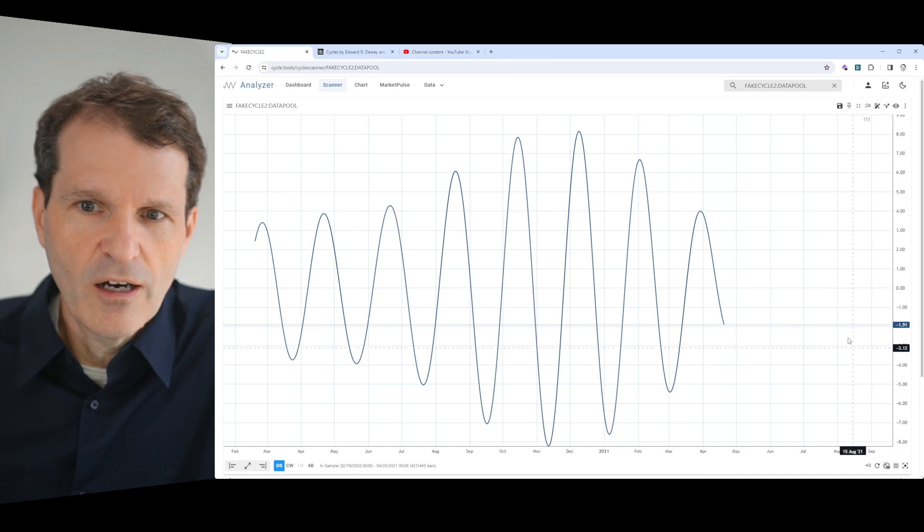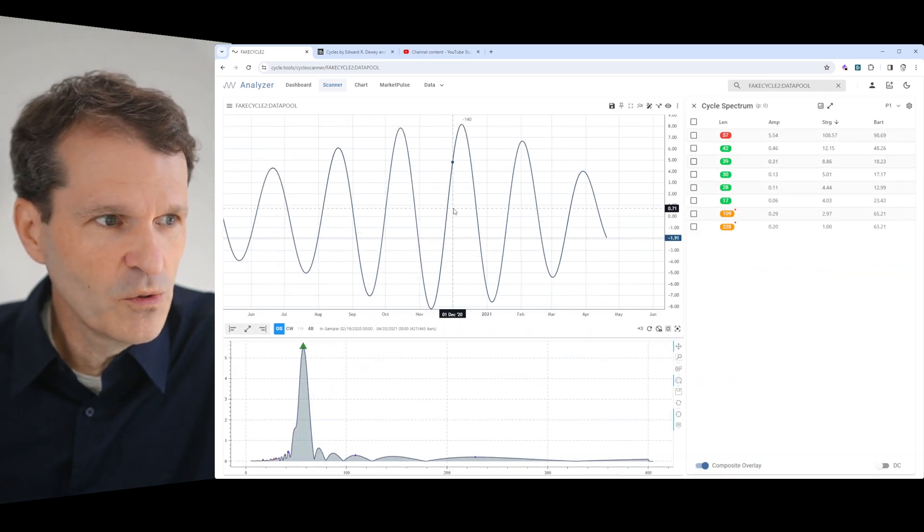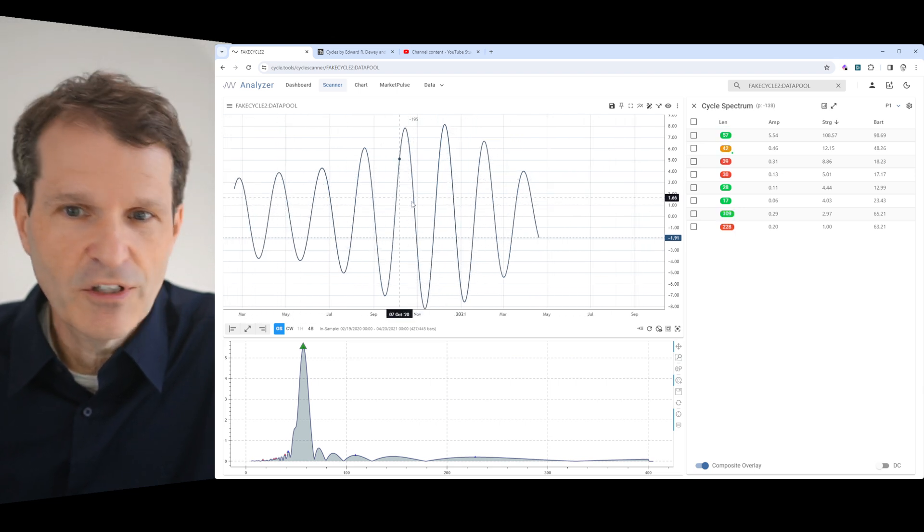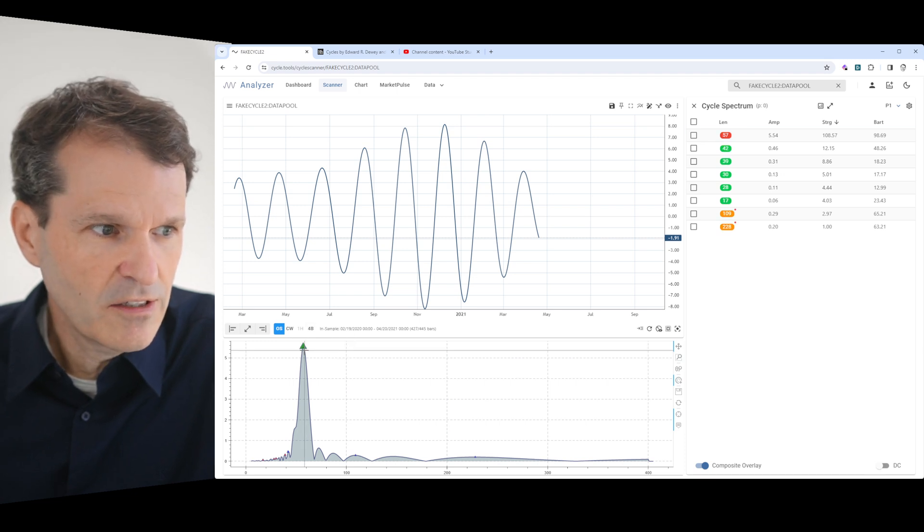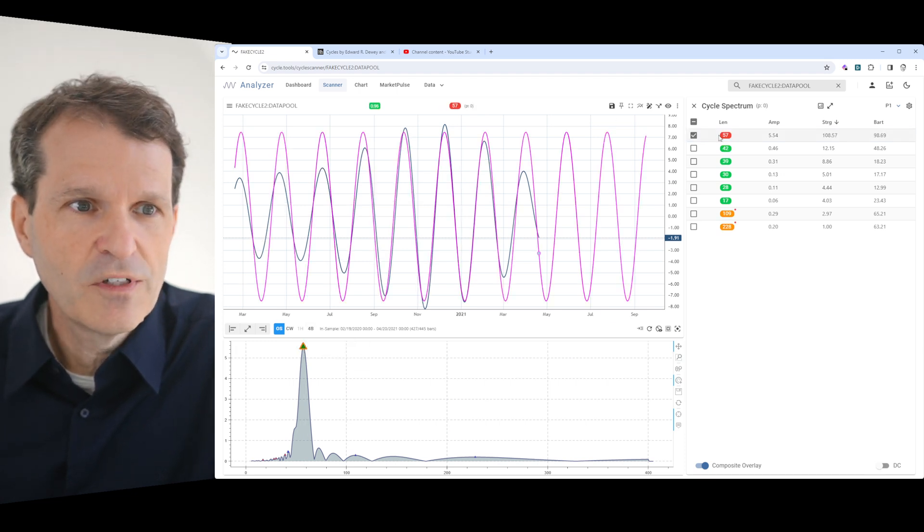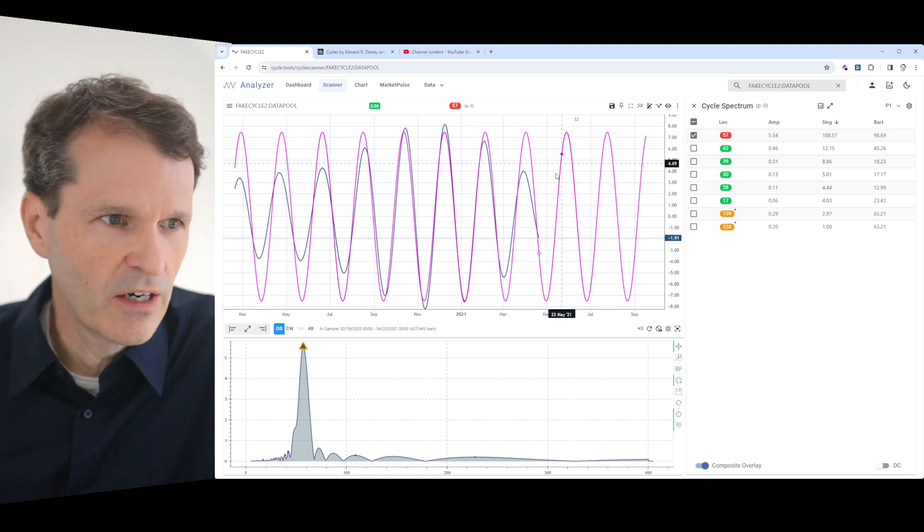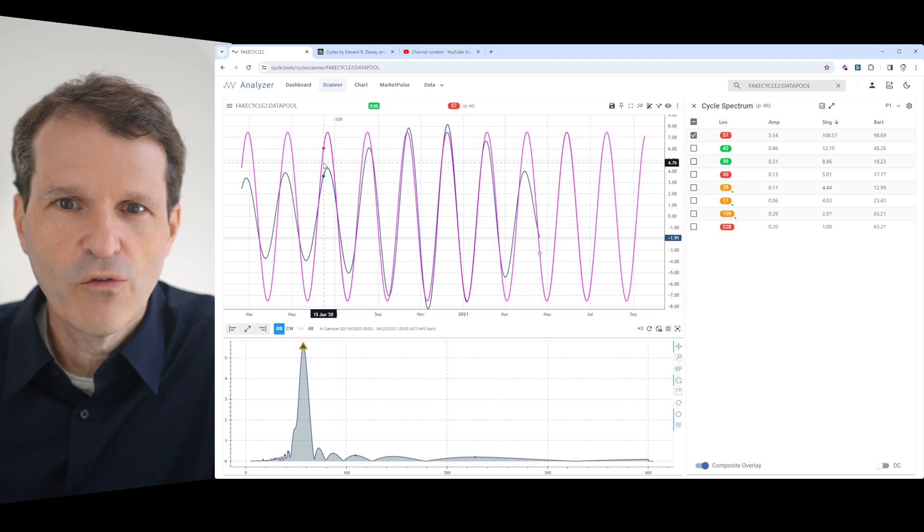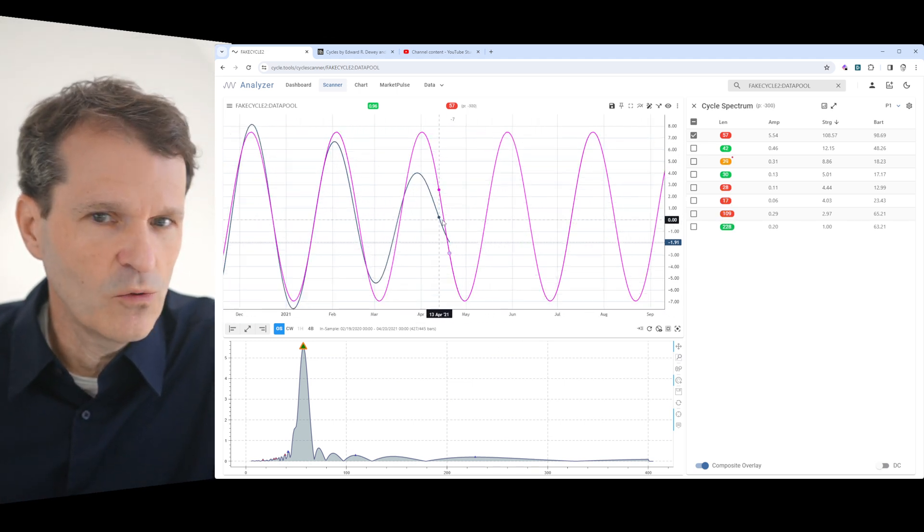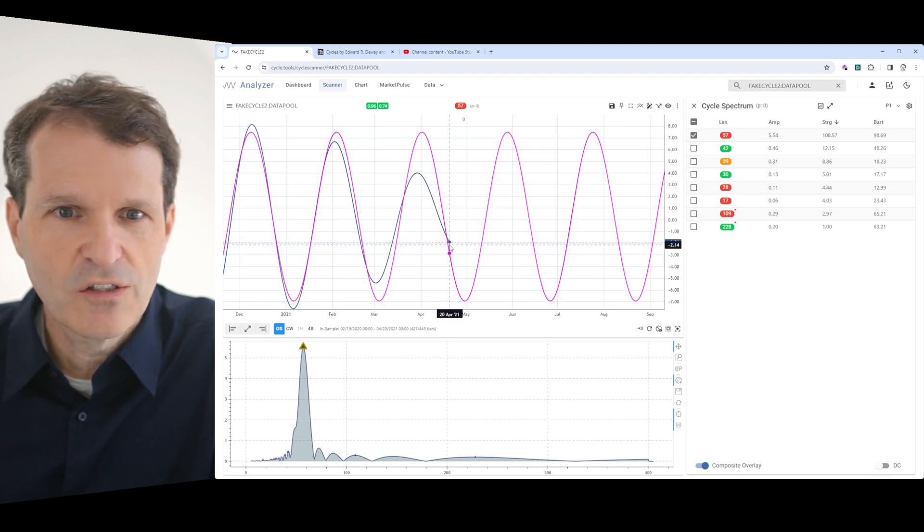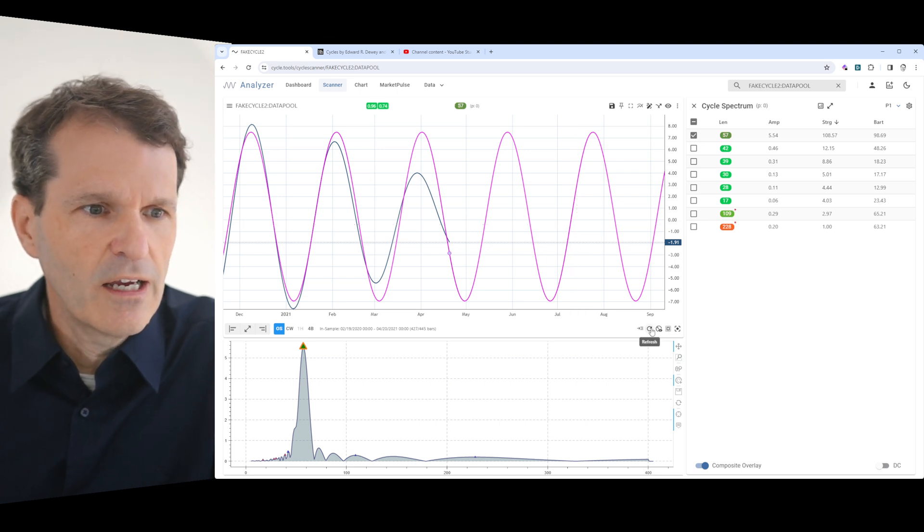If this would be one cycle, let's use this data set and run it through our cycle scanner. You'll see it looks like this is the cycle with a cycle of 57 days or weeks. You see it's just overlaid. This is the one cycle you assume is there, and then you start to plot your prediction into the future.